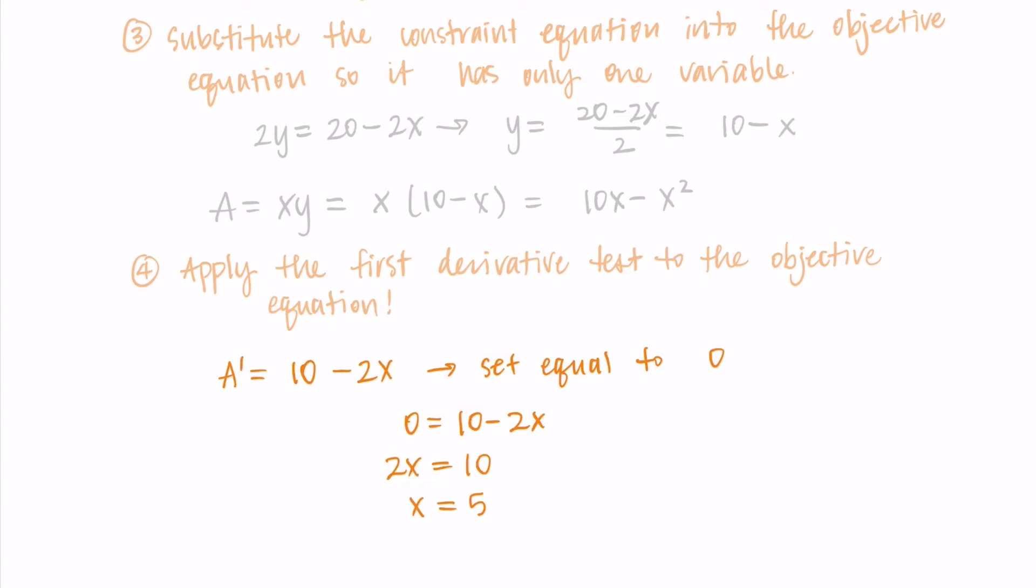But it does not hurt to just do the first derivative test really quickly to make sure that this is indeed the maximum. You can just choose two test points, substitute them into the derivative, and check the sign of the derivative in those intervals. I'm getting that the derivative is positive before 5 and then negative after 5, so 5 is indeed the maximum of our area equation.